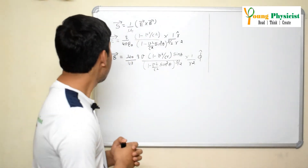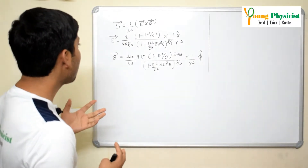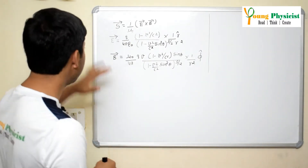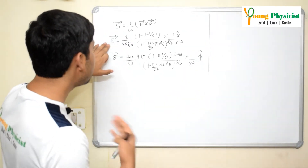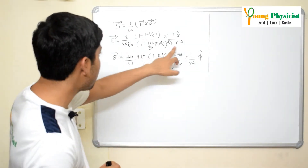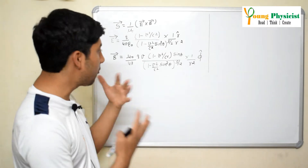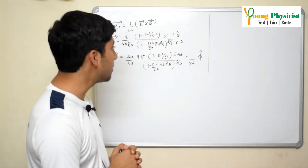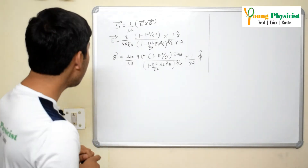The electric field and magnetic field are functions of velocity, since the charge particle is moving with a constant velocity. They also depend upon the square of the distance — the electric field is inversely proportional to the square of the distance, and the magnetic field is also inversely proportional to the square of the distance, where this distance is measured from the charge particle to the point of observation.